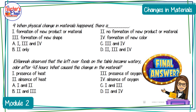Number ten: Hannah observed that the leftover foods on the table became watery after 48 hours. What caused this change in the material? One — presence of heat; two — absence of heat; three — presence of oxygen; four — absence of oxygen. A: one and two; B: two and three; C: one and three; D: two and four.